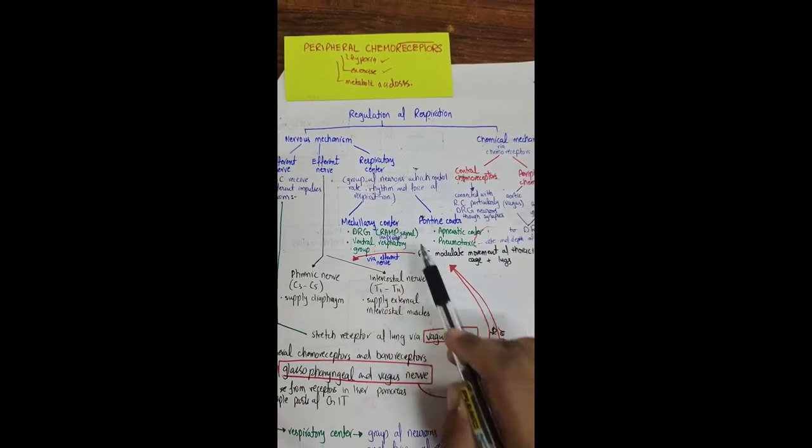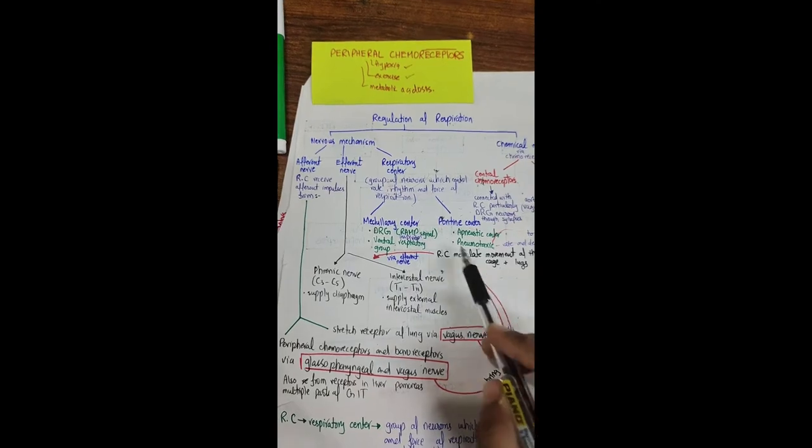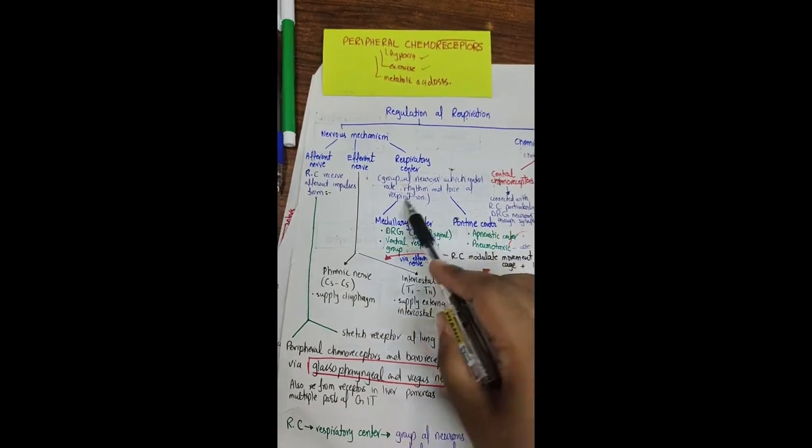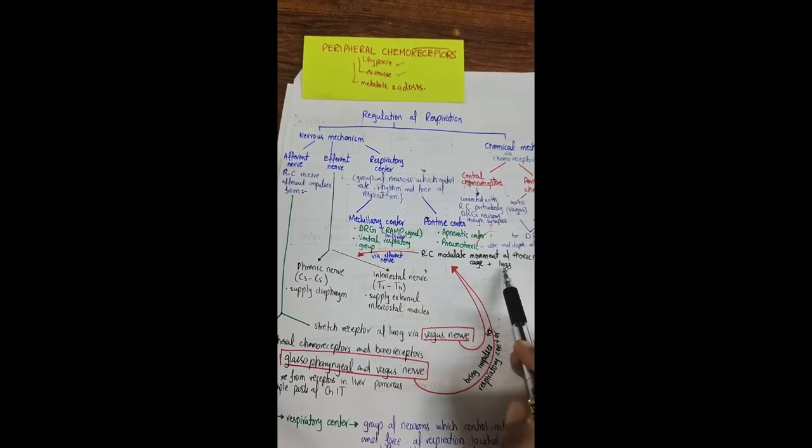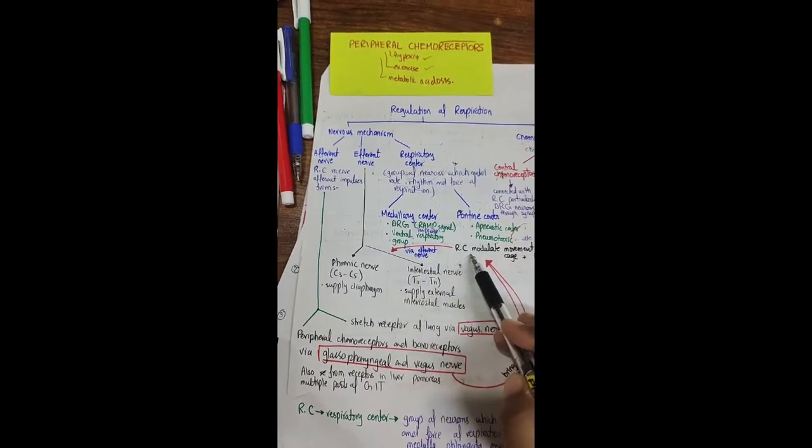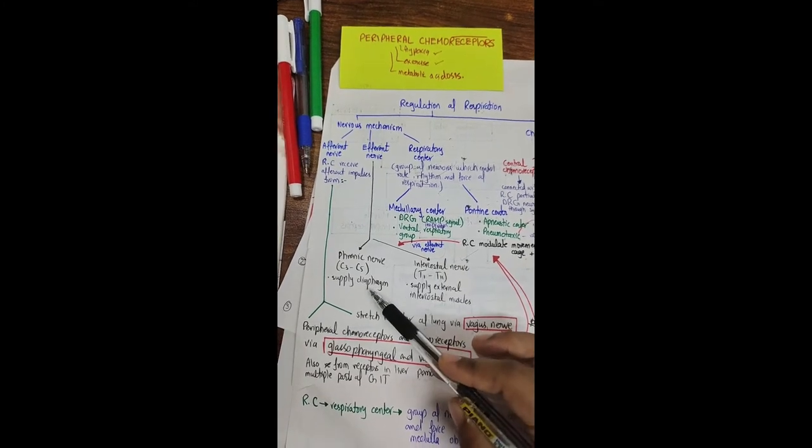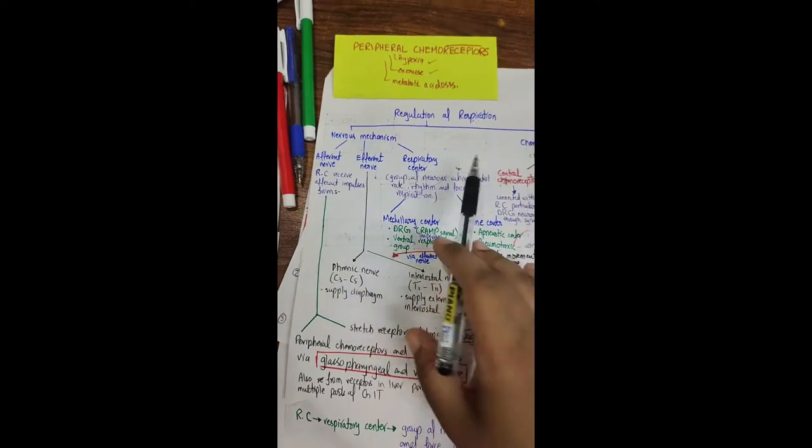The respiratory center modulates movement of the thoracic cage and lungs. How? Because this is integrated into a response that is brought to the thoracic cage and lungs by efferent nerves. So in efferent nerves we have phrenic nerve and intercostal nerve. Phrenic nerve impulses lead to diaphragm and intercostal muscles. So this was all about nervous mechanism.